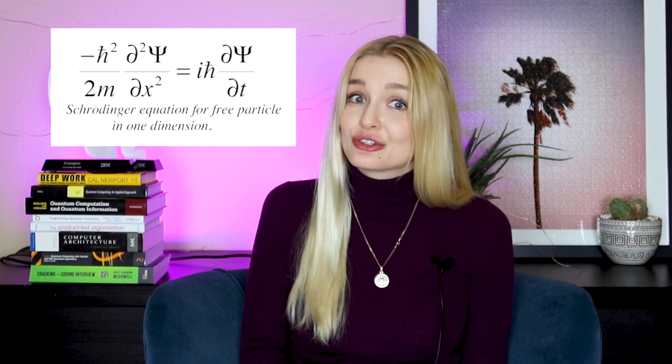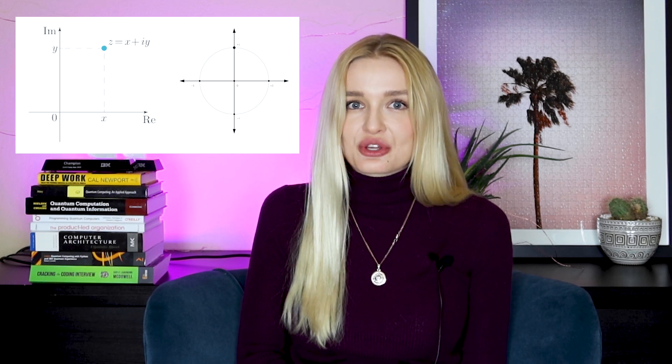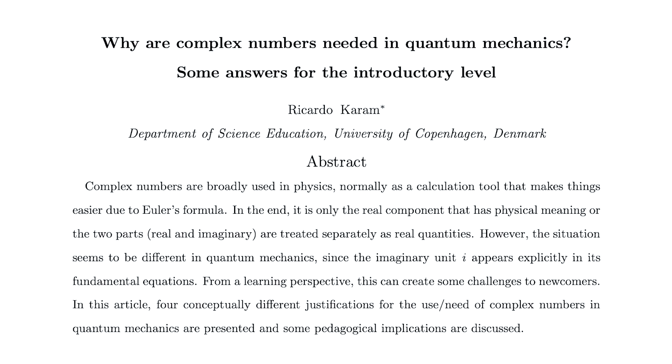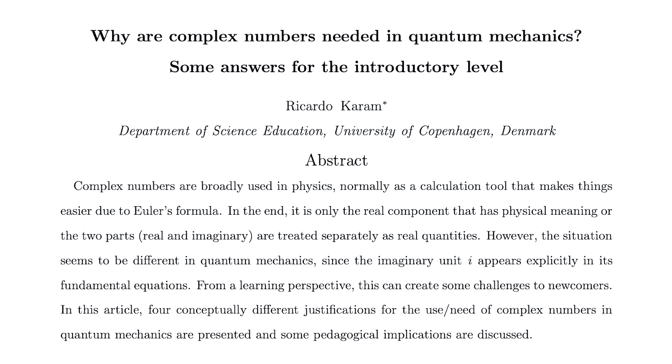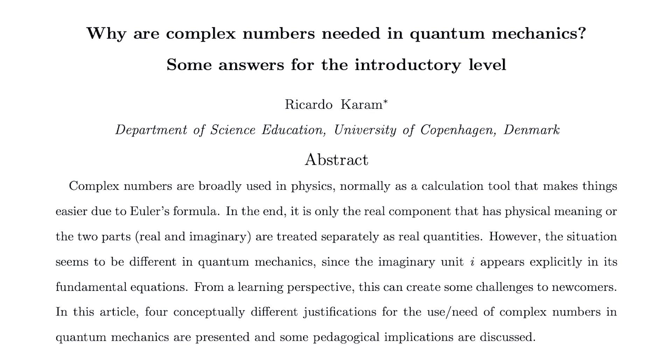Number two: complex numbers. Imaginary and complex numbers are the core mathematical base of quantum mechanics. They appear explicitly in its fundamental equations, including the Schrödinger equation. Why would we need an imaginary part to a physical system? This is beyond the scope of this video and it's actually quite a complex answer. Just know that you'll need to work with complex numbers. I'll link a paper below called 'Why are complex numbers needed in quantum mechanics? Some answers for the introductory level,' which talks about the four reasons for the use and need of complex numbers in quantum mechanics.